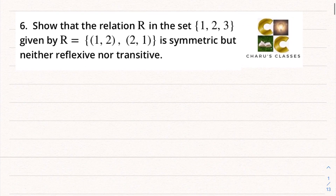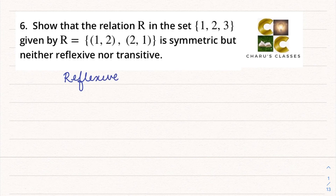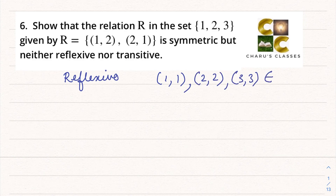Question number 6: show that the relation R in the set {1, 2, 3} given by R = {(1,2), (2,1)} is symmetric, but neither reflexive nor transitive. Let's first check reflexive. We can clearly see that (1,1), (2,2) and (3,3) do not belong to the relation, therefore it is not reflexive.